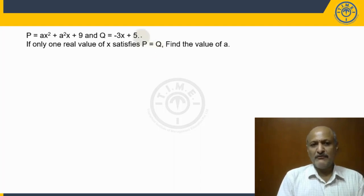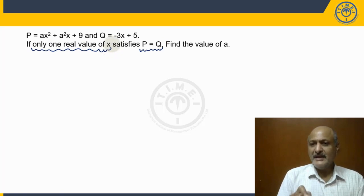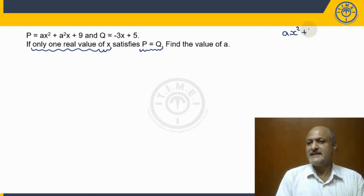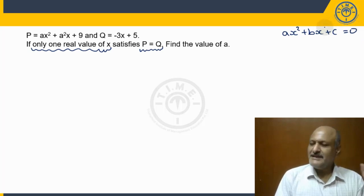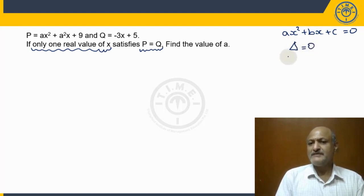There are two conditions we are looking for. Number one: p is equal to q. Number two: there is only one real value of x. That means the roots for x must be real and there should be exactly one. In a general quadratic equation ax² + bx + c = 0, the roots are real and equal when the discriminant is equal to 0 — that is, b² - 4ac = 0.